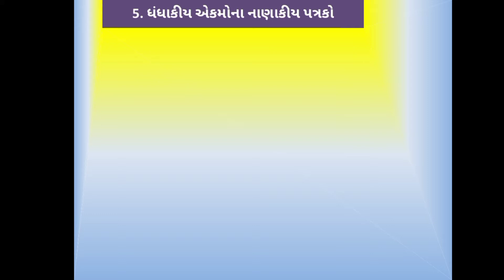કોઈ વેપારી આર્થિક વ્યવહારો નોંધવા માટે આમ-નોંધ તૈયાર કરે, એવું બની શકે. અને કોઈ મોટા વેપારી હોય કે જેમાં આર્થિક વ્યવહારનું પ્રમાણ વધારે હોય, તે આમ-નોંધની સાથે પેટા નોંધો પણ રાખે છે. રોકડ-મેળ પણ તૈયાર કરે છે, અટલે કે રોકડ વ્યવહારો. આ આગળના પ્રકરણમાં સીખી ગયા છો. આર્થિક વ્યવહારોની સૌ પ્રથમ હિસાબોમાં નોંધ કરવામાં આવે, પછી આમ-નોંધ, પેટા-નોંધ, કે રોકડ-મેળ પરથી યોગ્ય ખાતામાં ખતવણીની પ્રક્રિયા કરવામાં આવે છે.